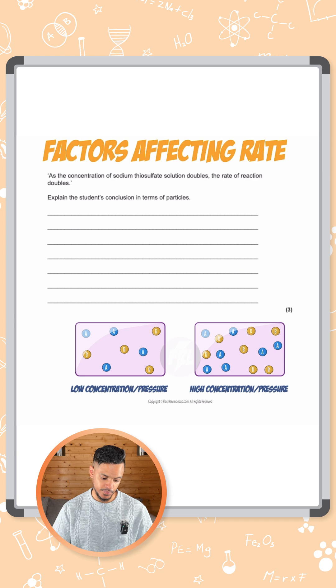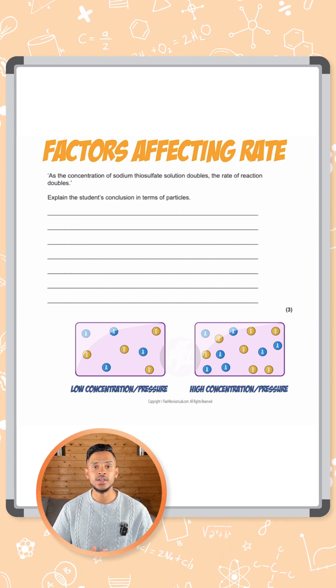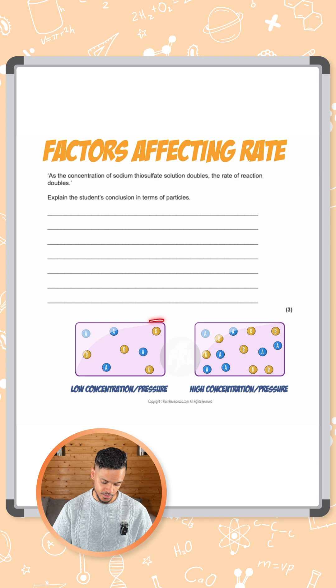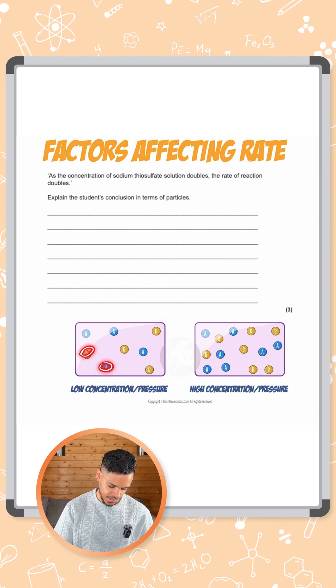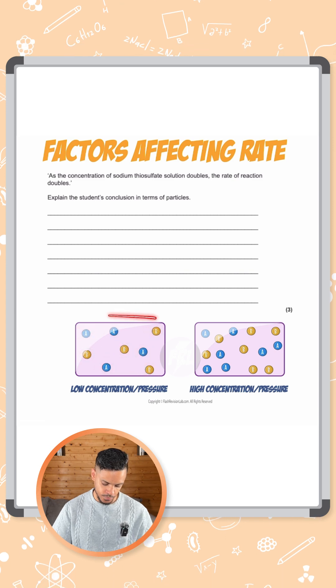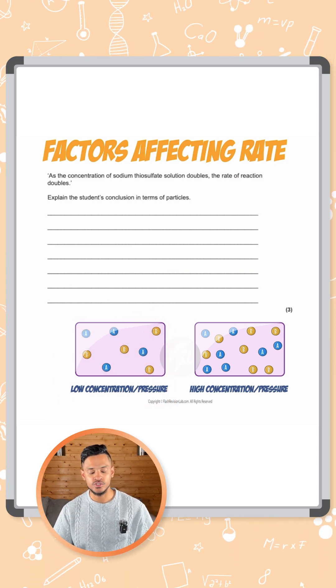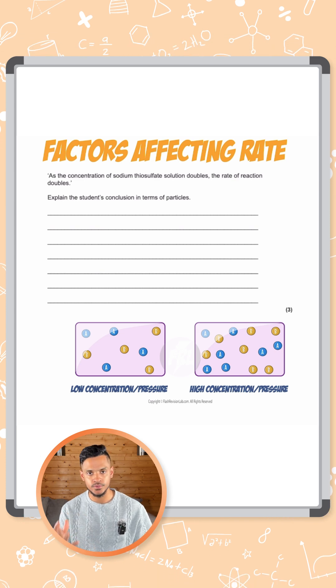So we've got two diagrams here to explain this at the bottom. The concentration of a solution is essentially how many particles there are in a given volume. So here we've got a given volume, inside that we have a set number of particles. In this example, the left-hand side diagram represents a low concentration because there's only few particles in that given volume.